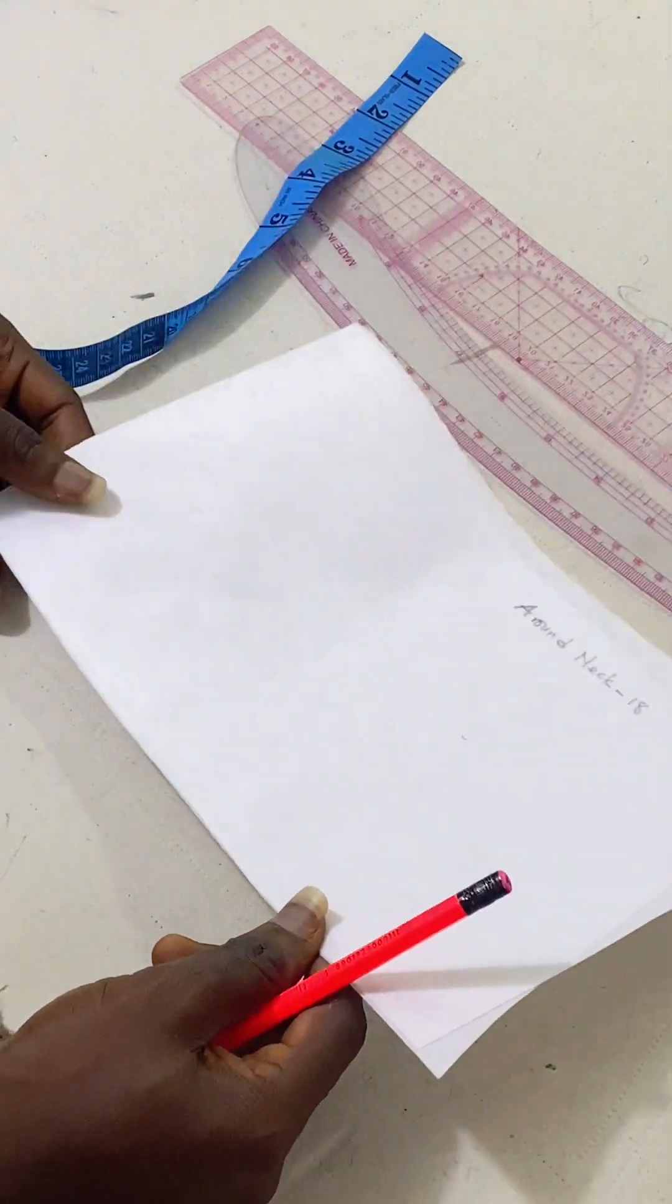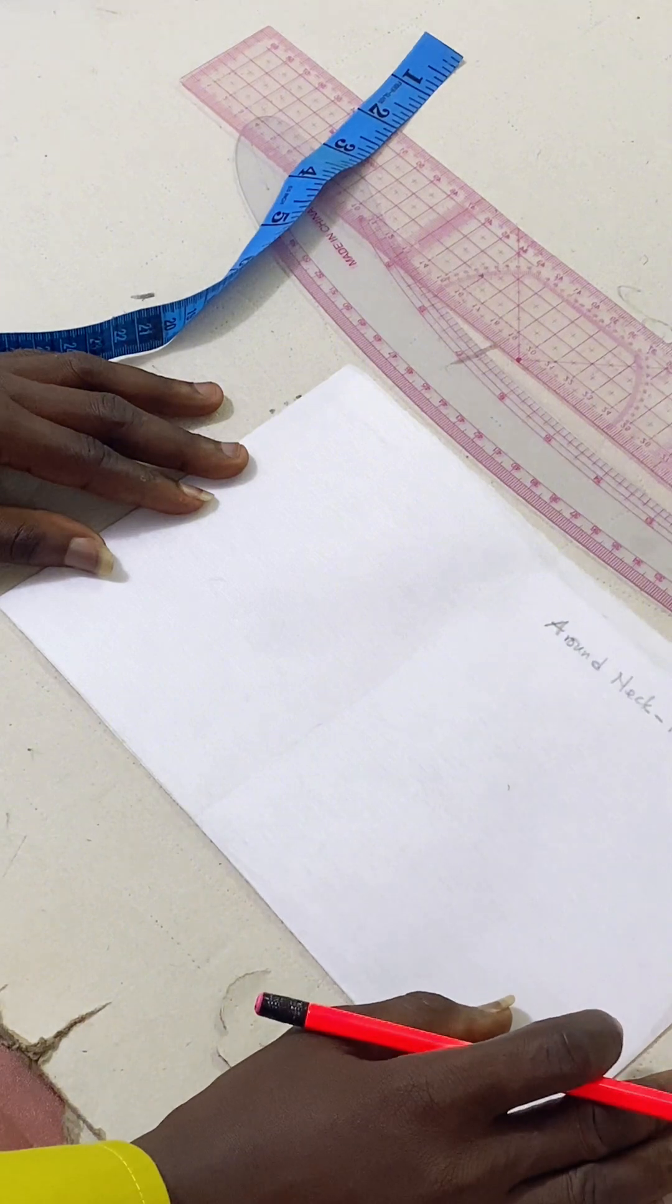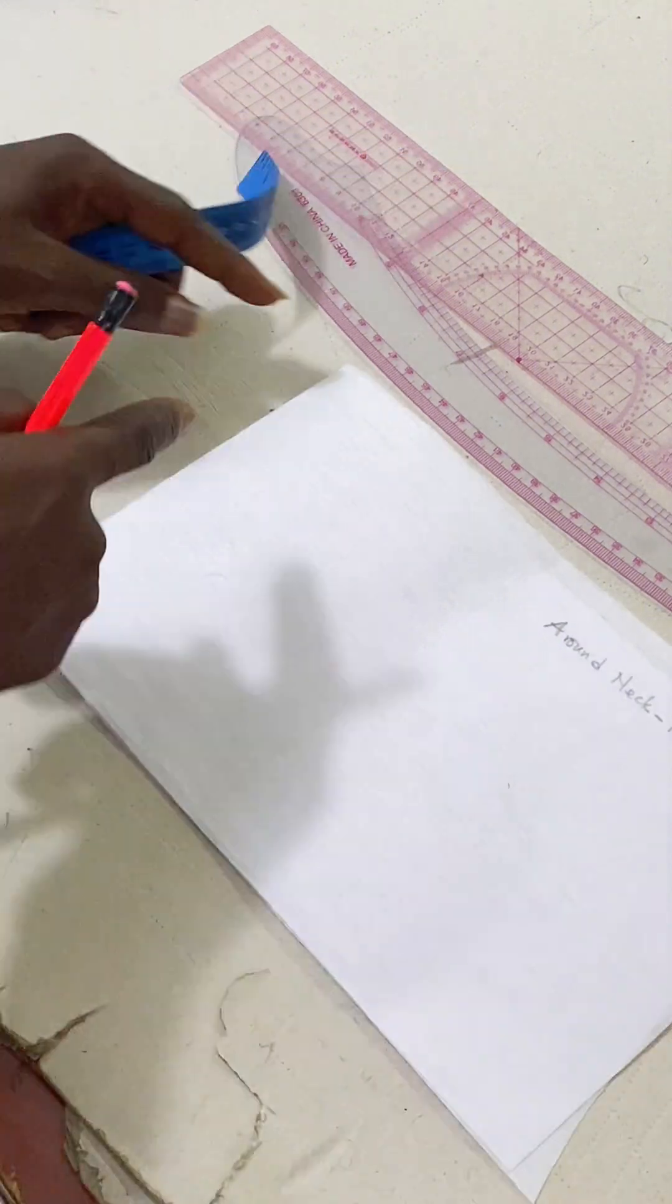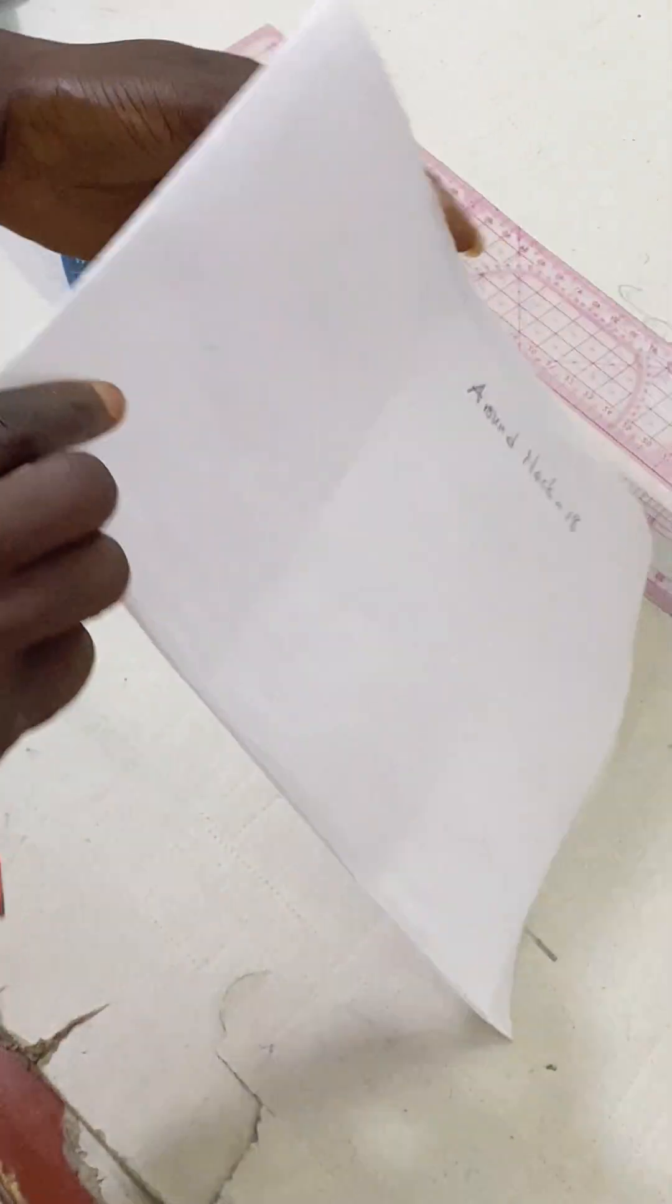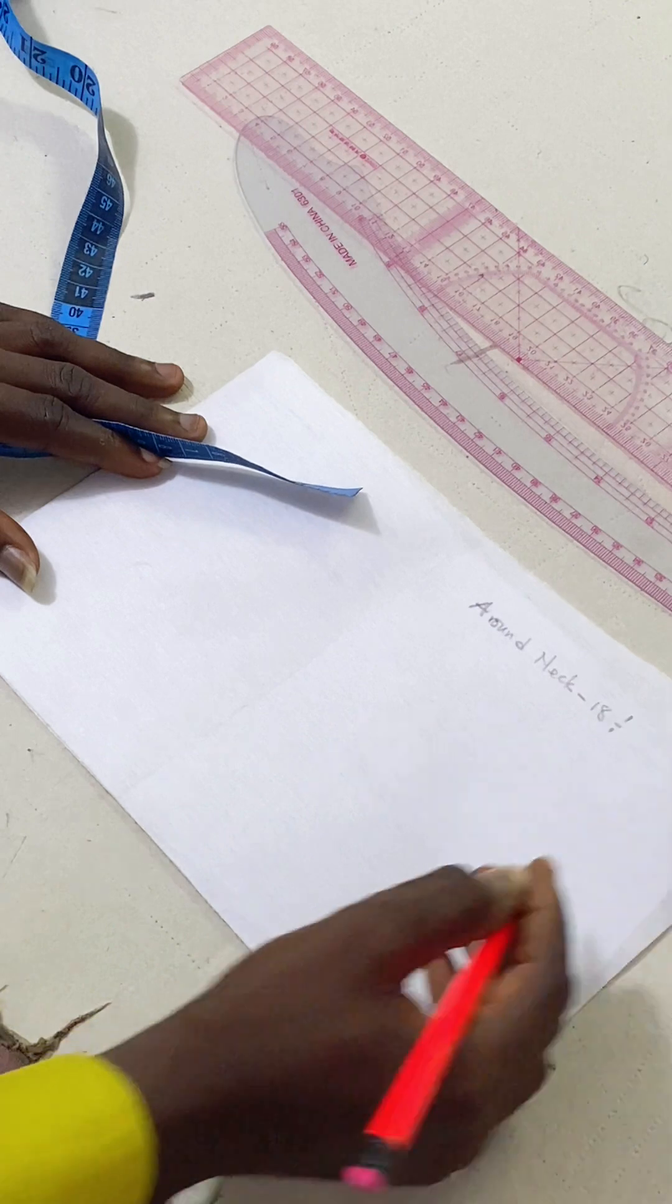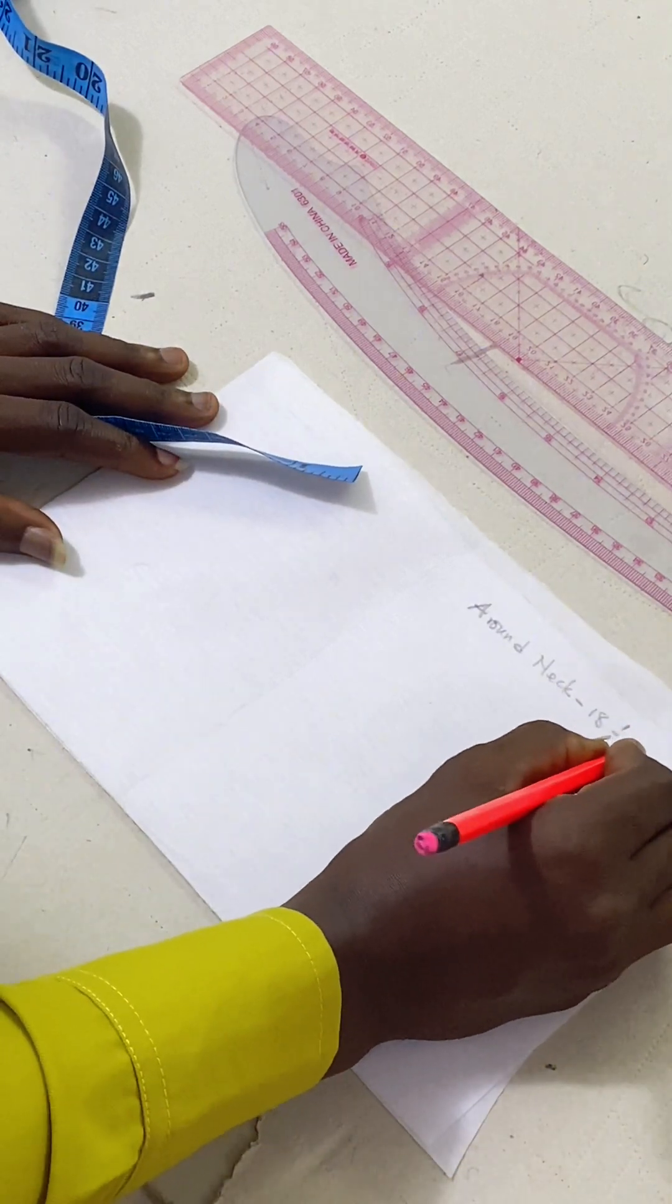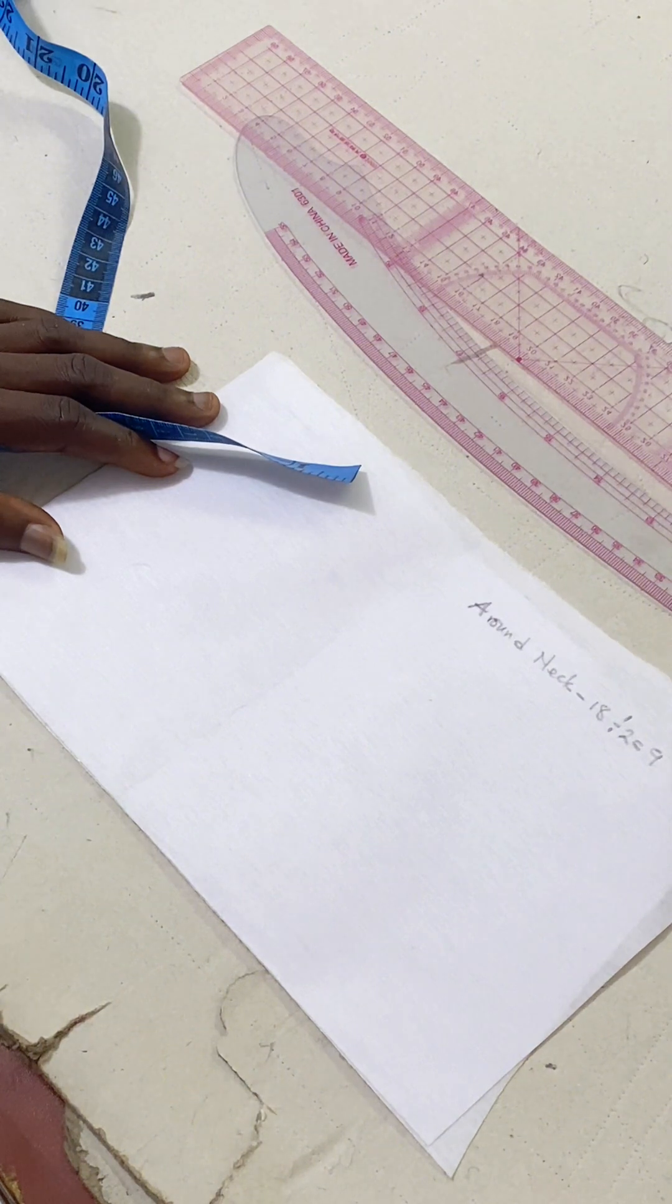When you're using an interfacing as I'm doing, you fold the interfacing into two. So you start from the folded area, this part, the folded area. Then you divide your around neck into two, giving us 9. That's 18 divided by 2, giving us 9.